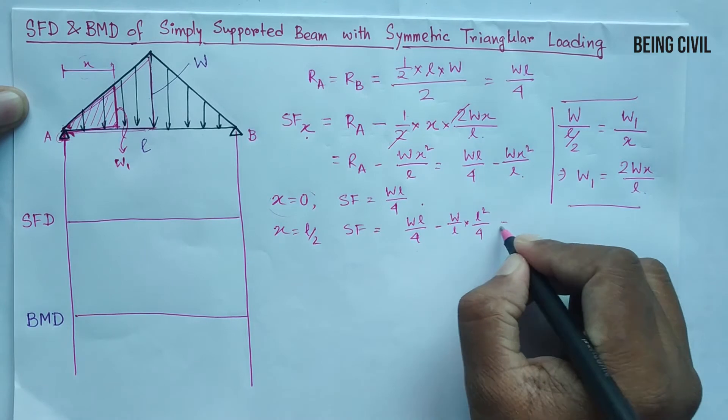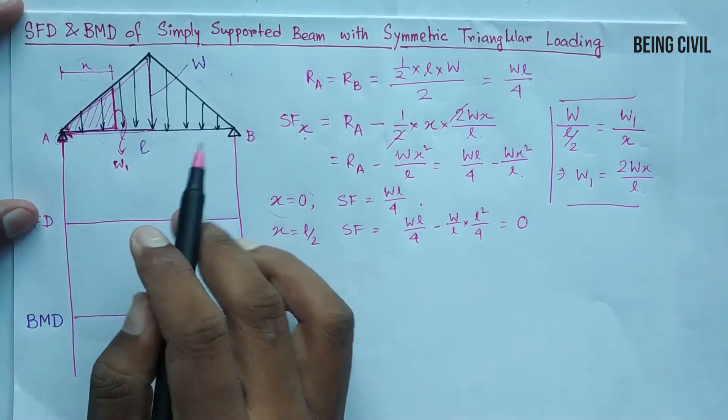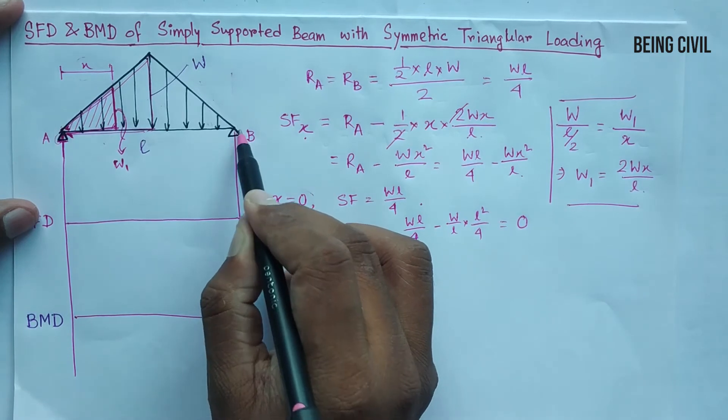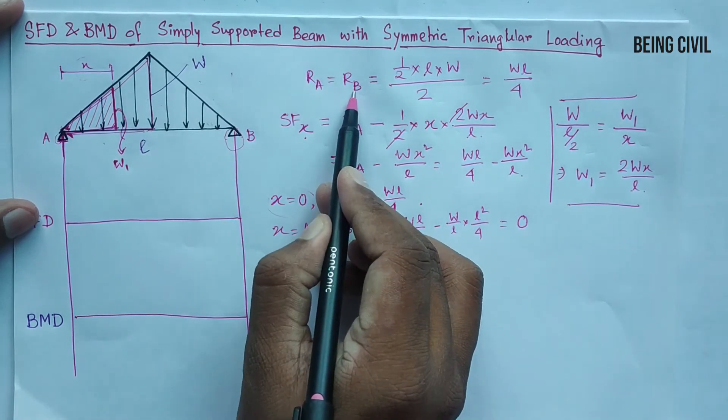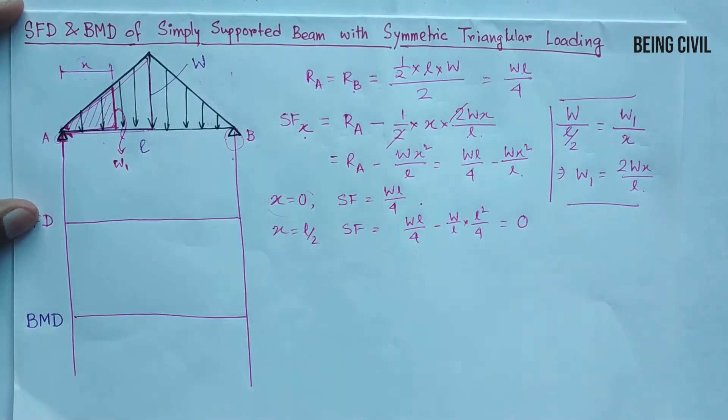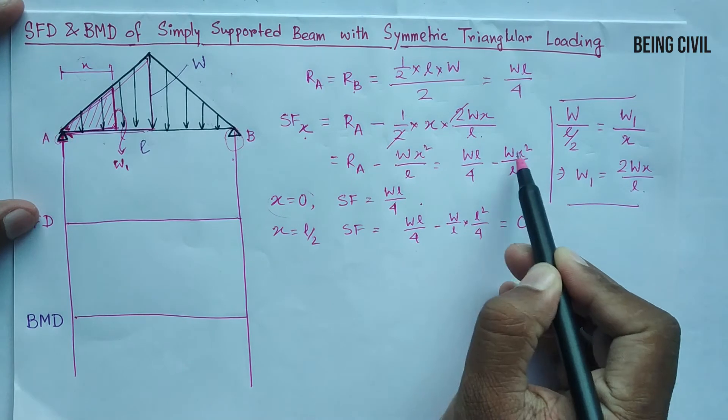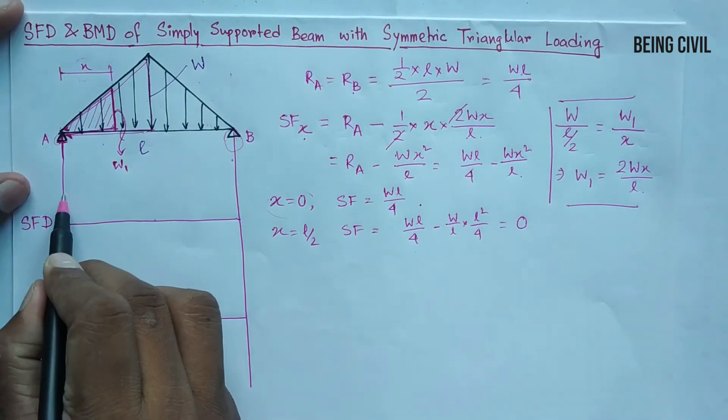At x equal to L by 2, SF equal to WL by 4 minus W by L into L square by 4, you get 0. So the shear force diagram will be symmetric and at this point B it will be equal to the reaction at B but the sign will be negative. So let us draw the shear force diagram. You see it is a parabola equation, that is with x squared, the diagram will be curved.